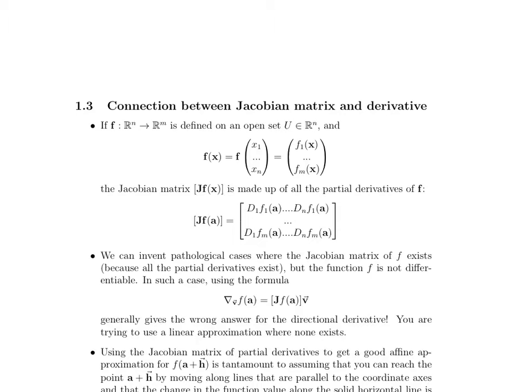If we have a function that maps from R^n to R^m, it's defined on an open set in R^n, and this is pretty much what it looks like, then it acts on some n-component input and gives us an m-component output. Then the Jacobian matrix Jf(x) is made up of all the partial derivatives of f. Here it is evaluated at a.